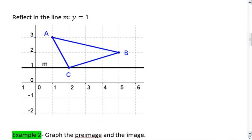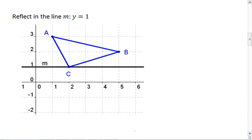How about you try this one on your own? I want you to reflect the triangle in the given line Y equals 1. So here is our line of symmetry. Try it on your own first, and then resume the video when you're ready to check your solution.